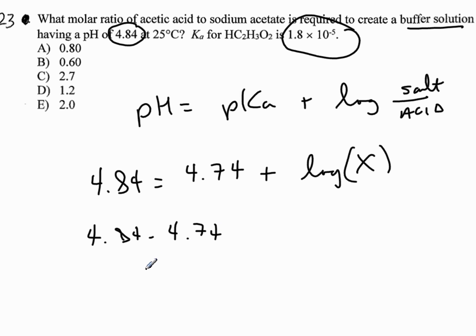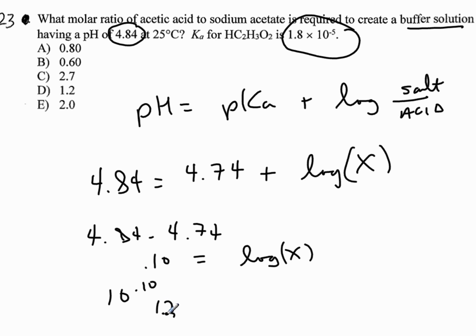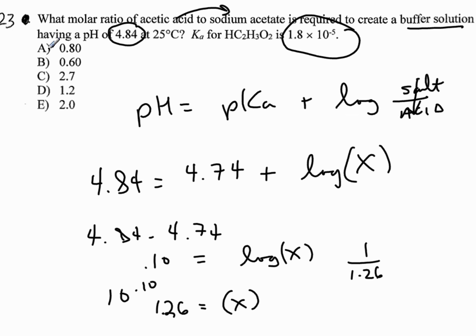Taking 4.84 minus 4.74 gives 0.10, which equals log of X. To get rid of the log, I raise 10 to the power of 0.10, giving X = 1.26. But remember, the Henderson-Hasselbalch ratio is salt over acid, and the question asks for acid to salt, so I take the inverse: 1 over 1.26 equals 0.79. The closest answer with rounding is A, 0.80.